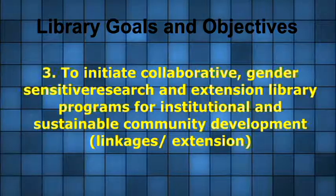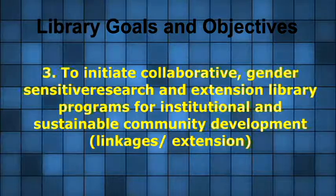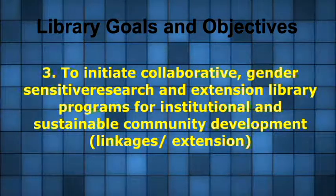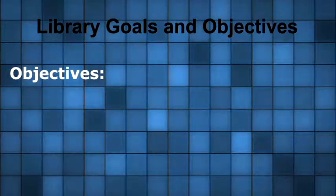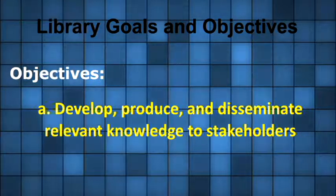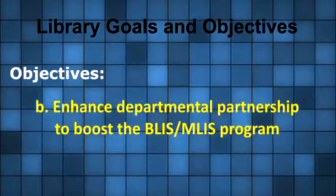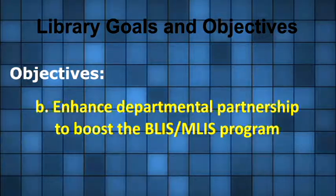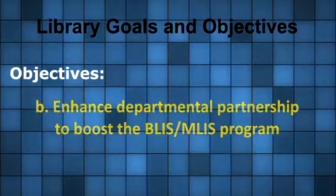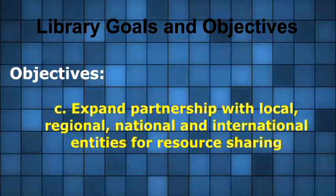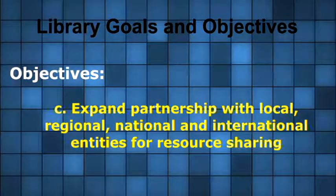Goal 3: To initiate collaborative, gender-sensitive research and extension library programs for institutional and sustainable community development. Goal 4 objectives: to develop, produce, and disseminate relevant knowledge to stakeholders. Goal 5: Enhance departmental partnership to boost the Bachelor of Library and Information Science or Master of Library and Information Science program, and expand partnership with local, regional, national and international entities for resource sharing.